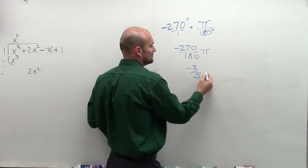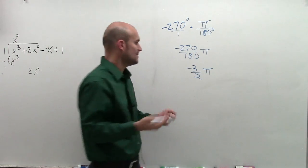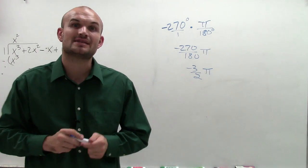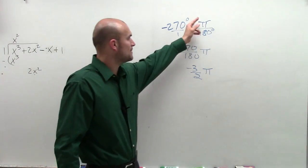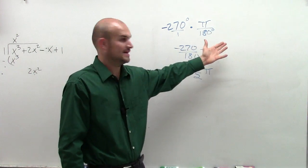And what you obtain is negative 3 halves π. So what that means is the angle of negative 270 degrees, you're going to multiply it by π over 180 to convert it to radian measure.